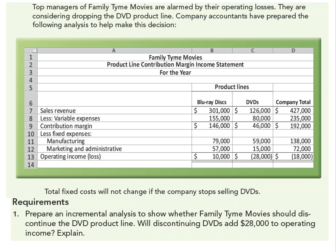Let's take a look at an example where a company is trying to figure out if they should eliminate an unprofitable segment. Top managers of Family Time Movies are alarmed by their operating losses and are considering dropping the DVD line. The company's accountants have prepared an analysis to help make this decision. Total fixed costs will not change if the company stops selling DVDs — that's very important. We need to prepare an incremental analysis to show whether Family Time Movies should discontinue the DVD product line.